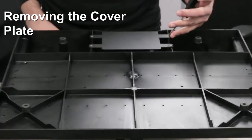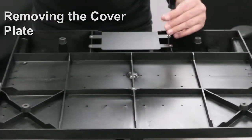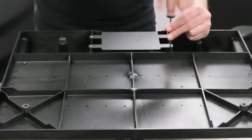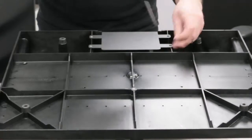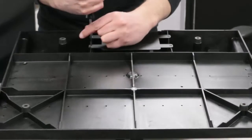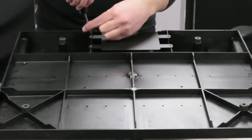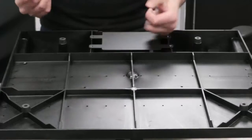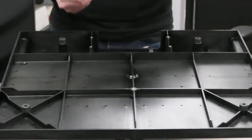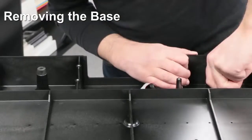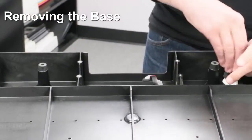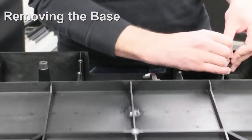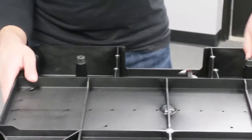The bottom cover plate is held by four screws. Next, remove the four screws which hold the base to the body of the autosampler.